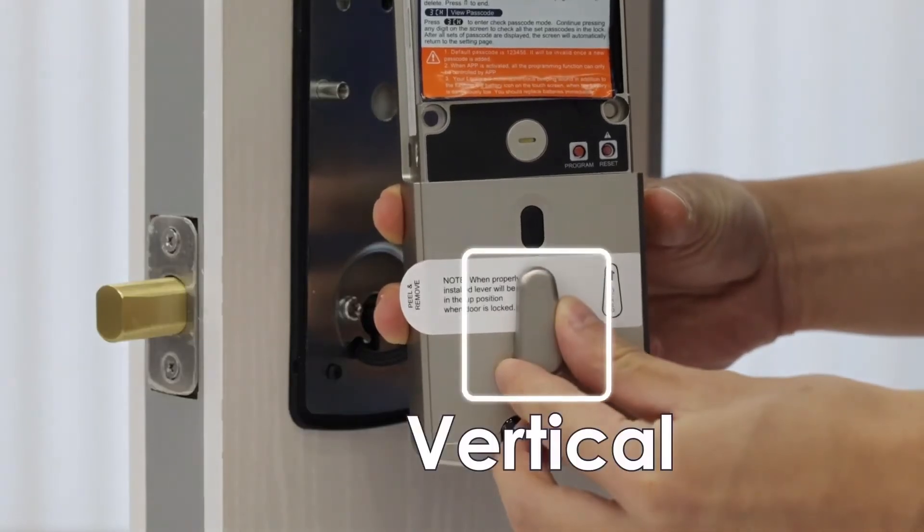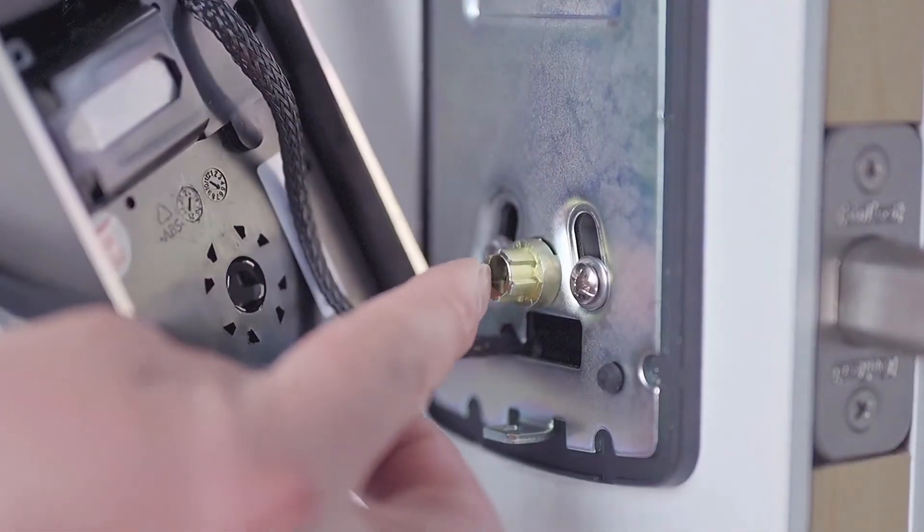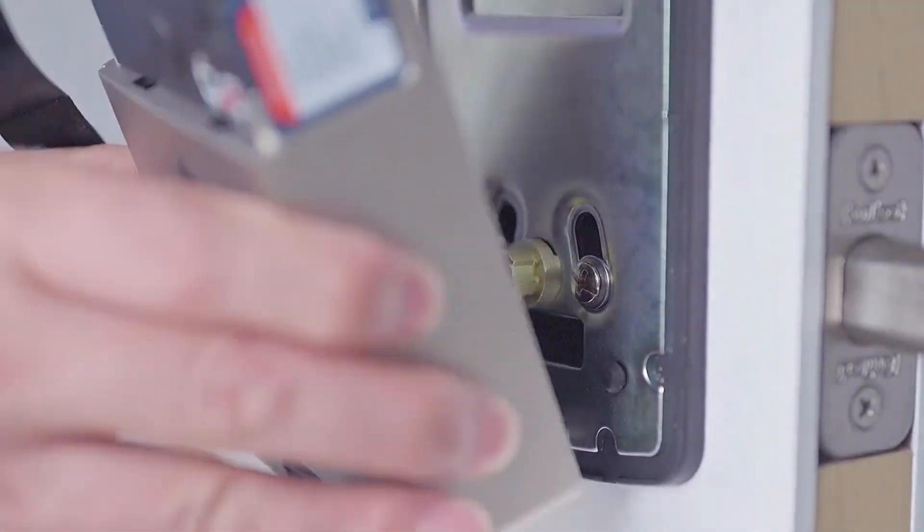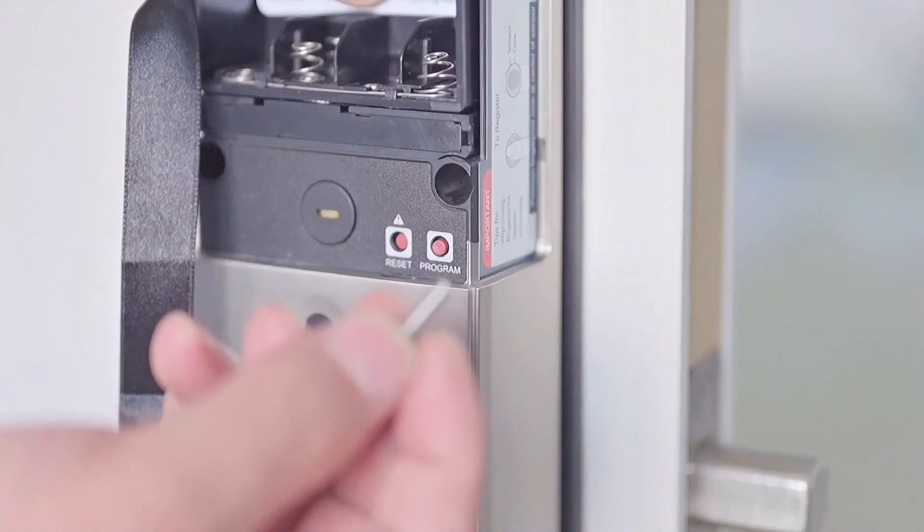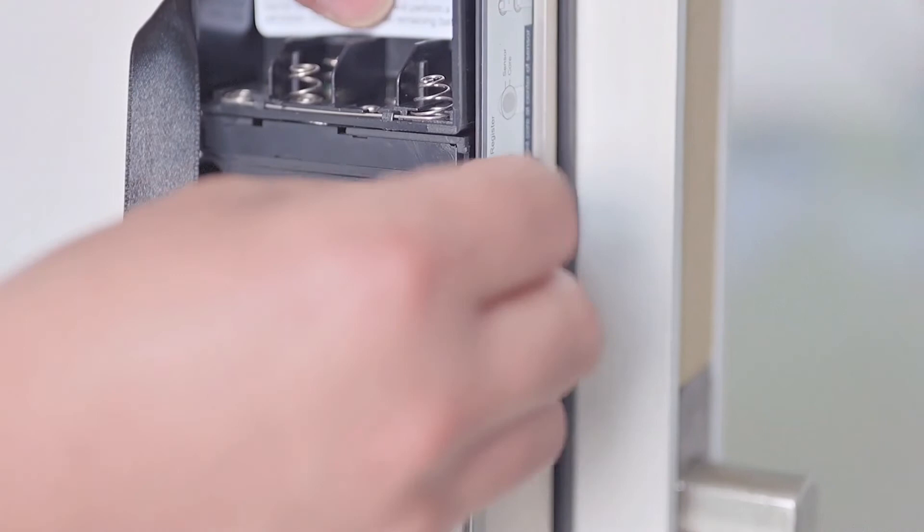Ensure the thumb turn is vertical. Place the interior assembly against the mounting plate and make sure the torque blade or spindle adapter is inserted to the thumb turn shaft. Secure the interior assembly to the mounting plate with two screws M.